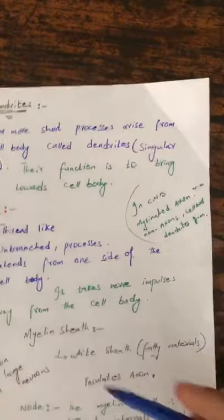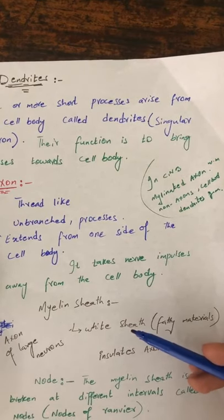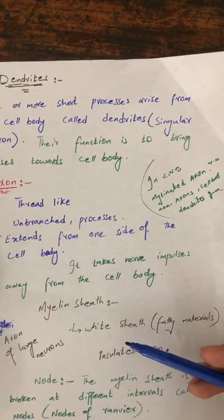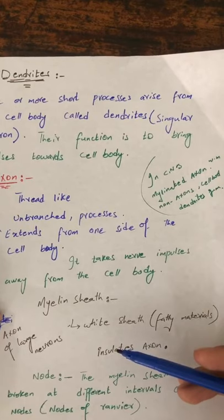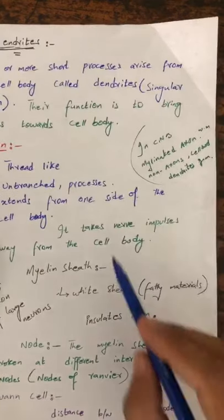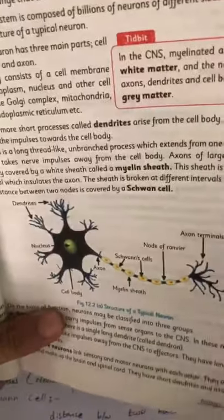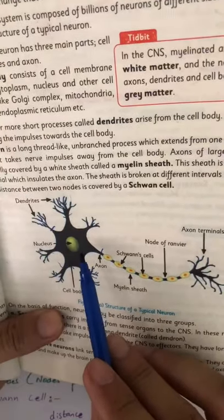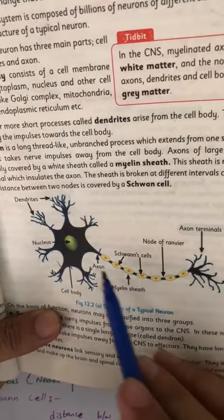The next part is the axon, which is the last portion of the neuron. The axon is a thread-like structure. Unlike dendrites which are branched, the axon is unbranched. It is an elongated, thread-like unbranched structure that arises from the cell body.